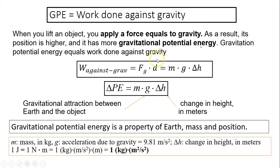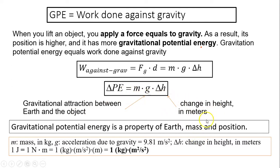Gravitational potential energy equals the work done against gravity. If you lift an object, you apply a force equal to gravity, raising its position, giving it more gravitational potential energy. Work done against gravity equals the force applied — which equals gravity, mg — times the displacement, which is the change in height Δh. So gravitational potential energy = mgΔh, where g is 9.81 m/s² and Δh is the change in height in meters.